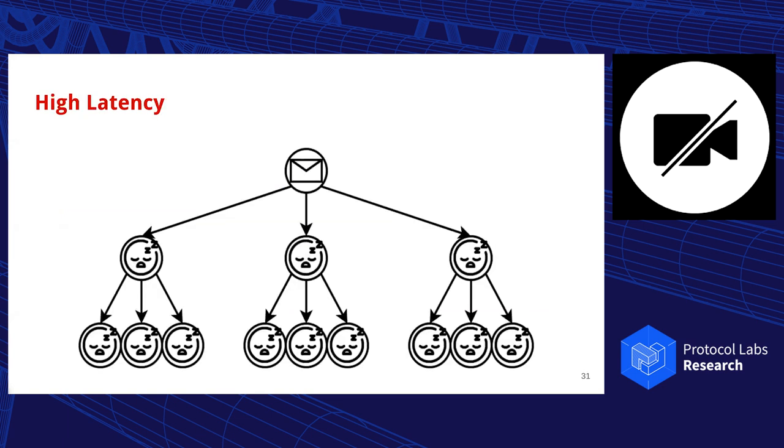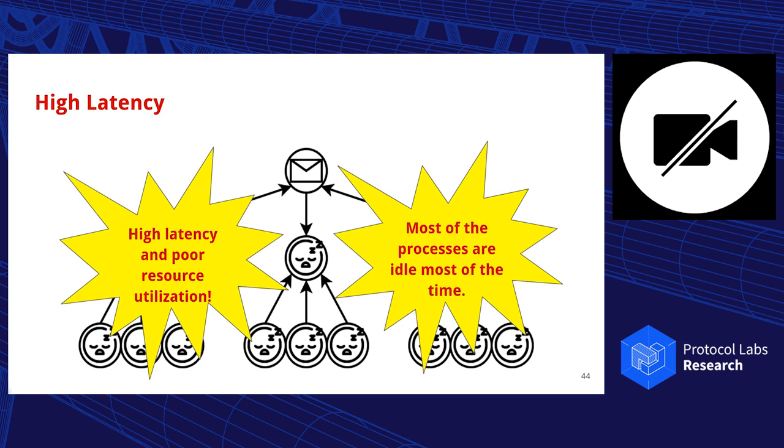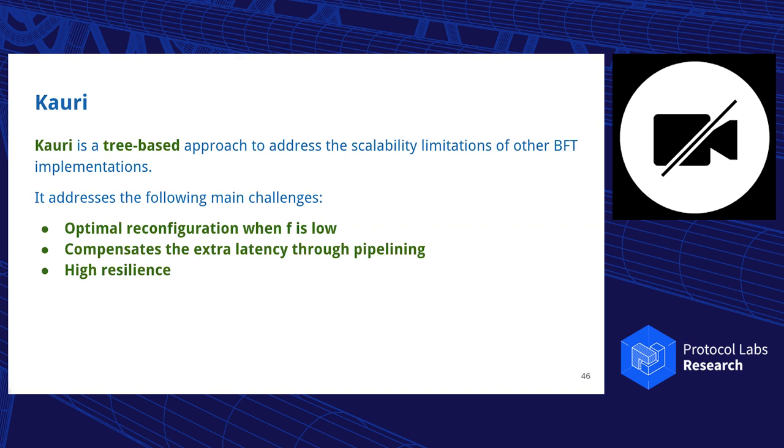In terms of latency, while the messages propagate through the system, the majority of the time, the majority of the processes are just idle, waiting for the next message or waiting for the answers to process. This is a big problem because the actual resource utilization is very low, so the throughput is much lower than it actually could be. That's what we tried to solve with Kauri. Kauri is a tree-based approach, so we also use dissemination and aggregation trees, but we try to solve several of those problems. We have optimal reconfiguration for low F or number of failures, we compensate the extra latency through a pipelining scheme, and we still offer high resilience.